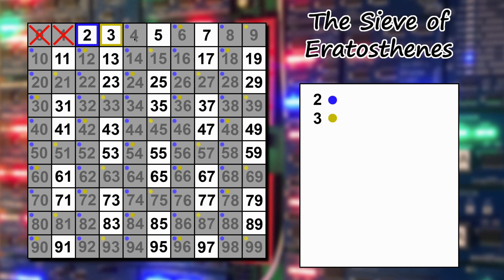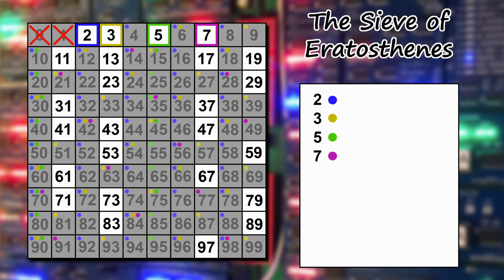4 has already been crossed out, so it's not prime. We move to 5, which hasn't been crossed out, so 5 is prime — we add it to our list and cross out all its multiples. As we progress, the crossing out gets easier and easier because there are fewer multiples of larger numbers within the range. 6 is not prime, 7 is prime and we cross out its multiples. 8, 9, and 10 are all crossed out, so 11 is our next prime.